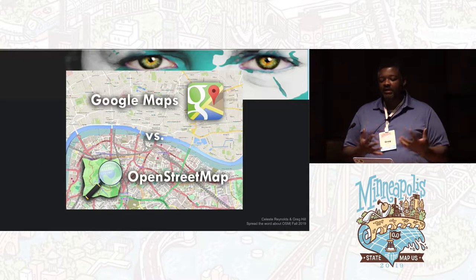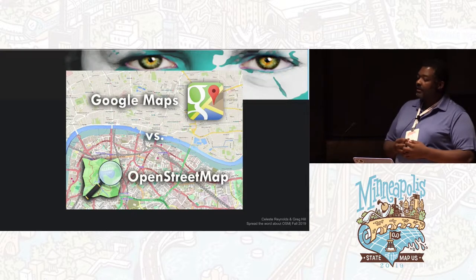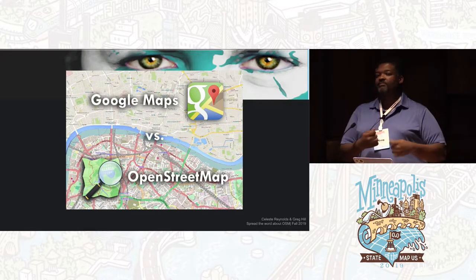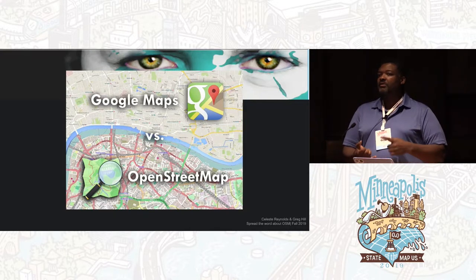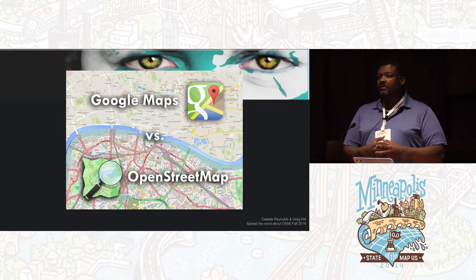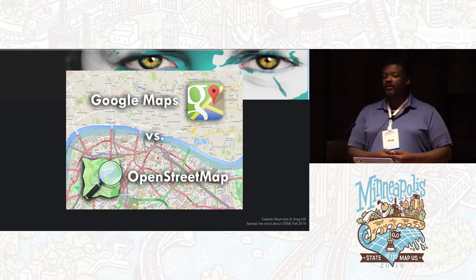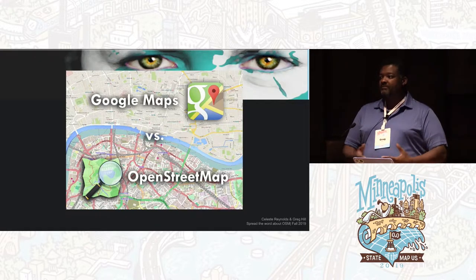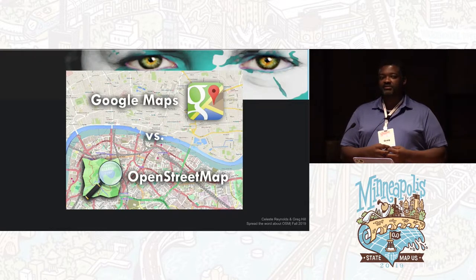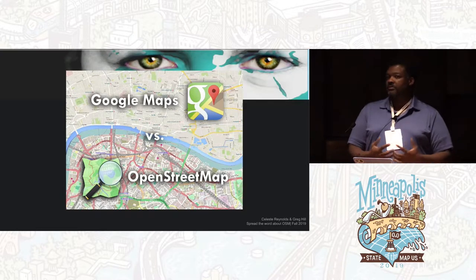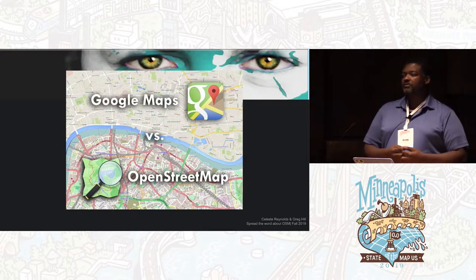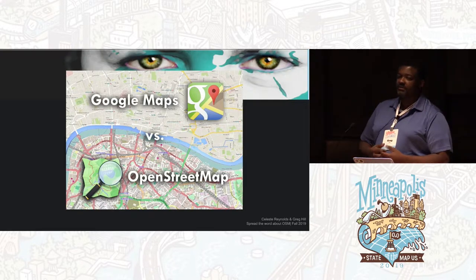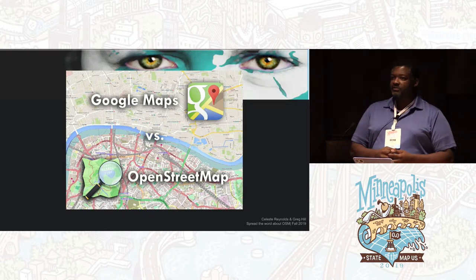A lot of schools are going to this concept of one-to-one, where each student has one electronic device — usually a Chromebook. And that Chromebook is usually tagged to Google Suite, so oftentimes the default for educators is to use Google Maps: will you Google Map this, will you make a Google Tour using Tour Builder? It's really easy and it's a great tool for teaching kids how to use geospatial technology.